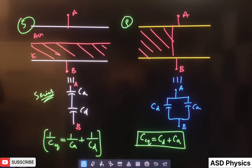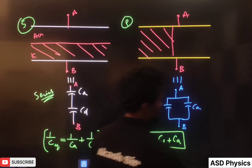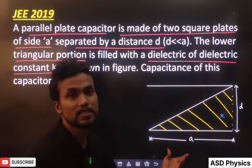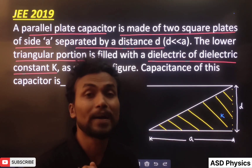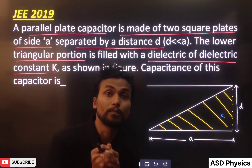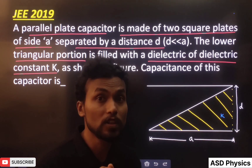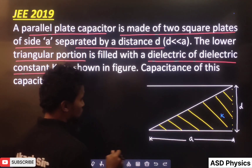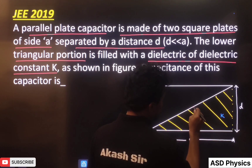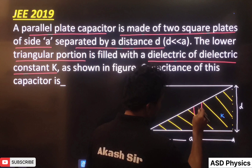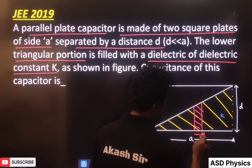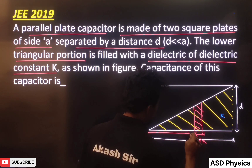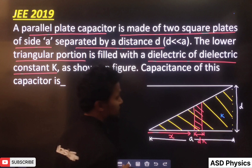Because this basic concept we have to use now. Here, the dielectric is triangular in shape, so we have to use the method of integration. For that, first we have to make a formula by taking a very small strip of thickness dx. I have taken this region here, and this thickness is dx, at a distance x from one end.